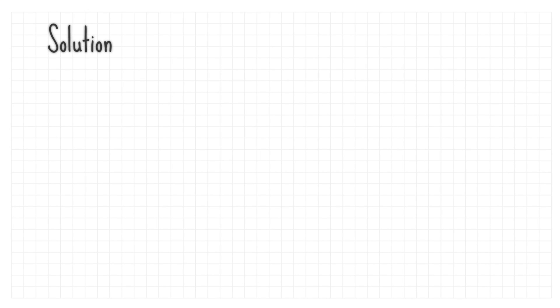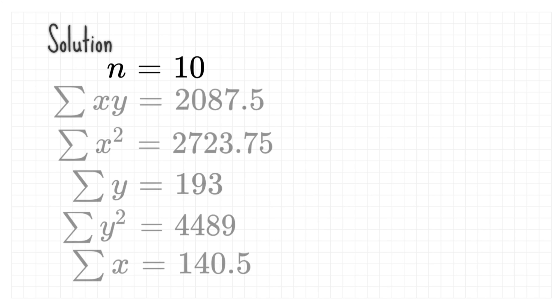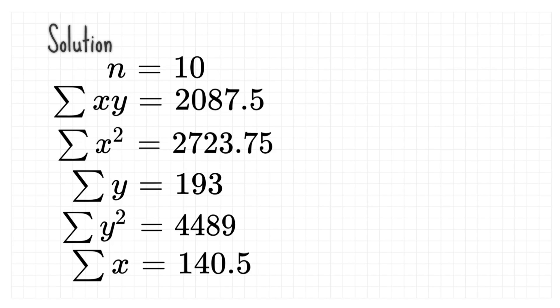From the data, there are 10 models of pens means there are 10 paired observations. So, N is 10. Using your calculator, list out all the summations. There are 5 summations to list out.